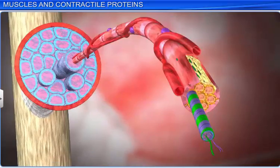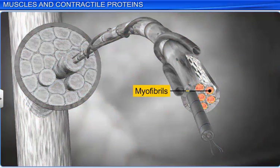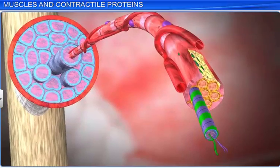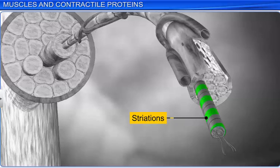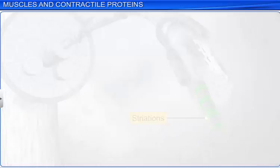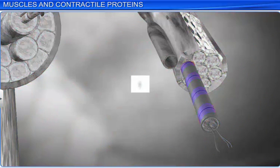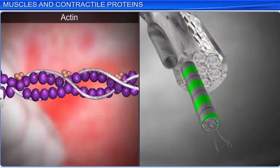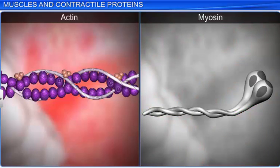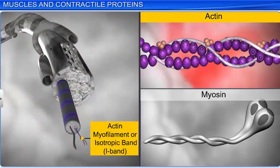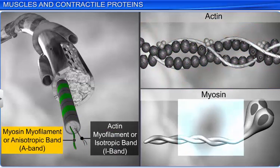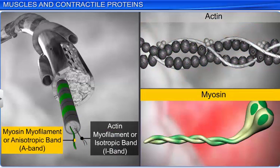Each muscle fiber consists of several myofibrils that are parallelly arranged. When viewed under an electron microscope, these myofibrils show alternate light and dark bands. These striations are due to the alternate distribution of two important proteins, actin and myosin. The light band contains actin and is known as the isotropic band, or I-band. Whereas the dark band contains myosin and is known as the anisotropic band, or A-band.